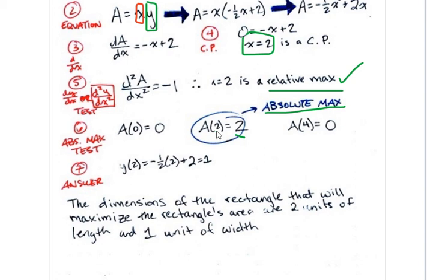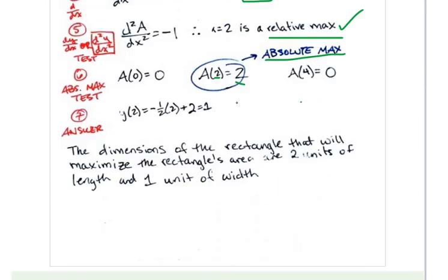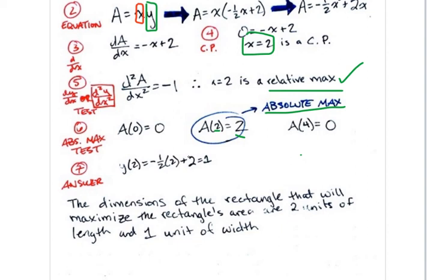Well, obviously we just plugged in a 2 for x. Obviously we know that the length is 2. But we need to know the width. And what is the width? Well, remember, earlier, we said that the width was whatever you get when you plug in x into this equation. So when you plug in x into this equation, you get 1. So the dimensions of the rectangle that will maximize the rectangle's area are 2 units of length and 1 unit of width.